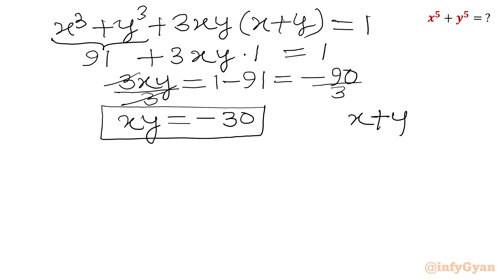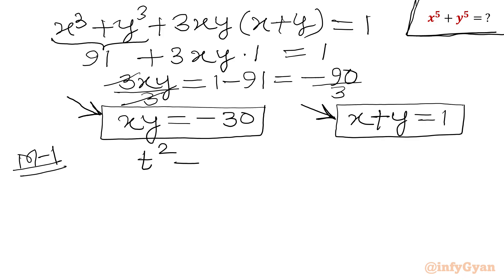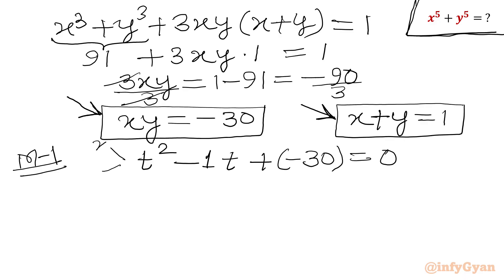So we now have x + y = 1 and xy = −30. Method 1: to find x⁵ + y⁵, I will calculate the roots x and y directly. We form a quadratic equation whose roots are x and y, with sum of roots = 1 and product of roots = −30. So the quadratic in t is: t² − t − 30 = 0.